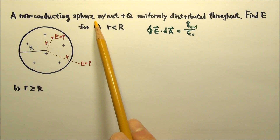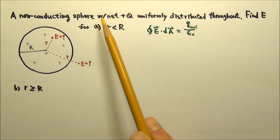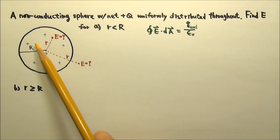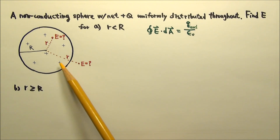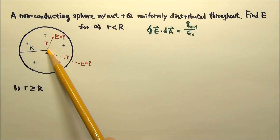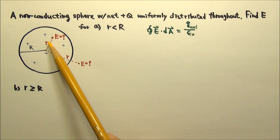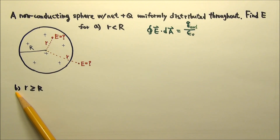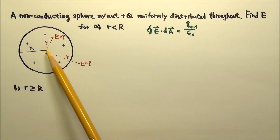Consider a non-conducting sphere with radius big R and a net charge of positive Q that is uniformly distributed throughout the entire volume of the sphere. Find the electric field a distance little r from the center. Part A is when little r is smaller than big R, and part B is when little r is greater than or equal to big R.